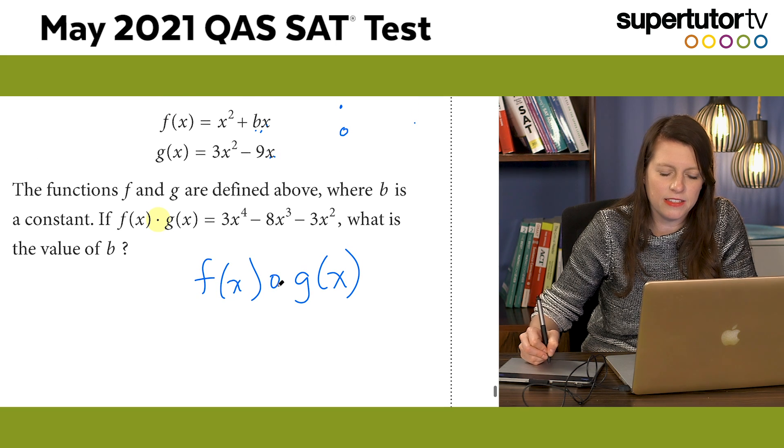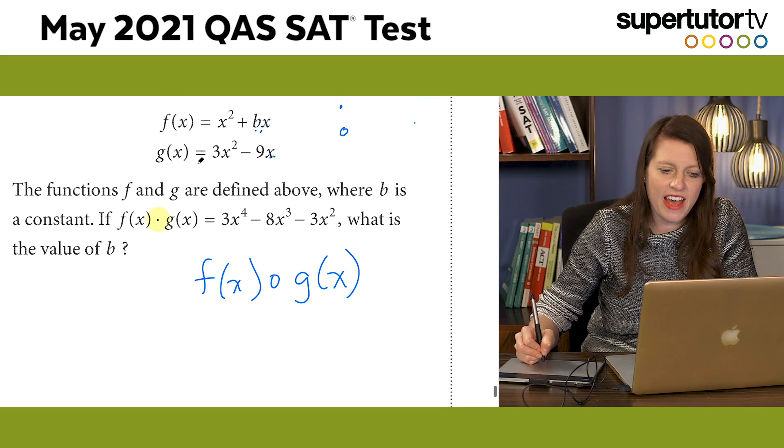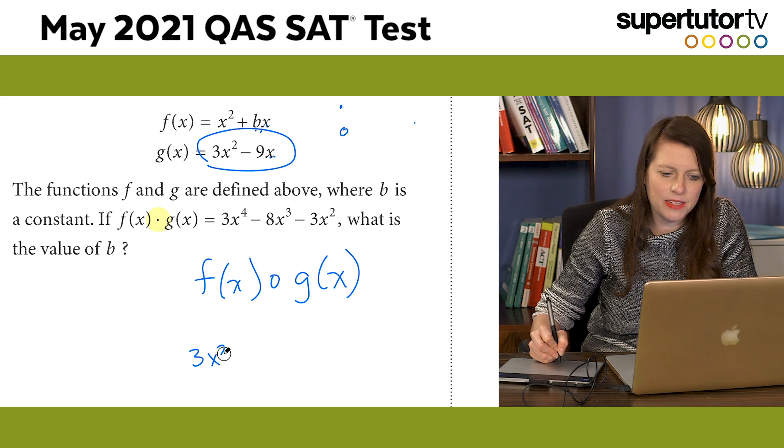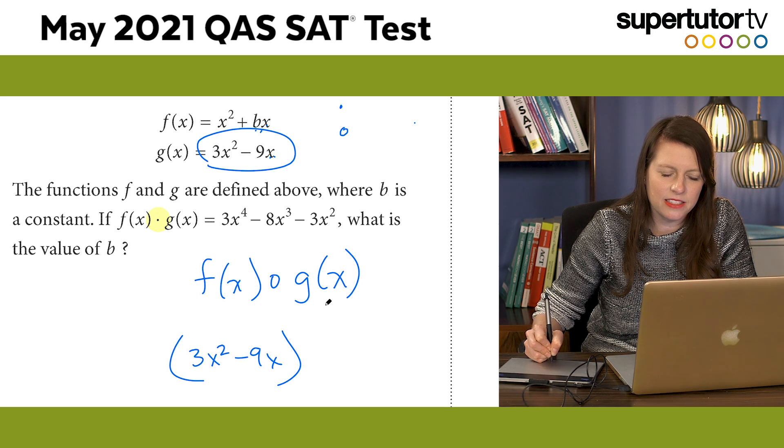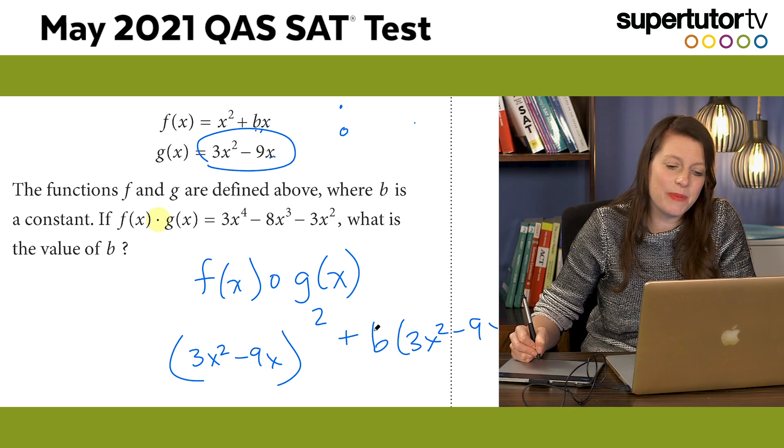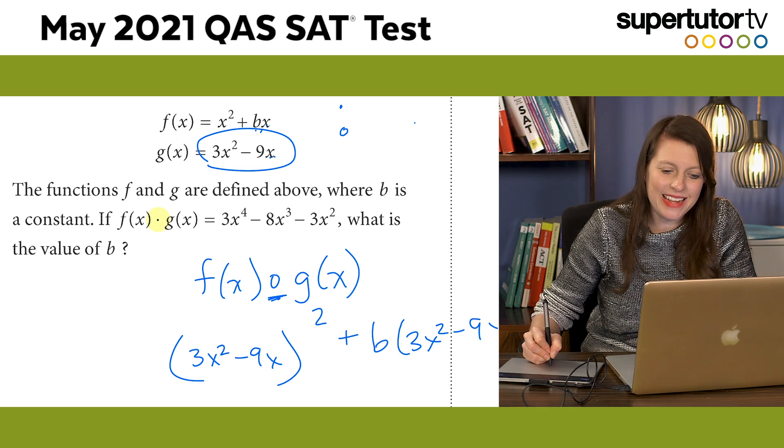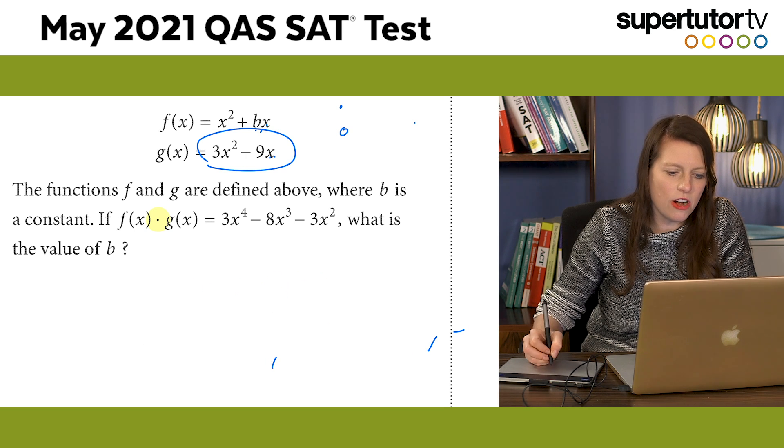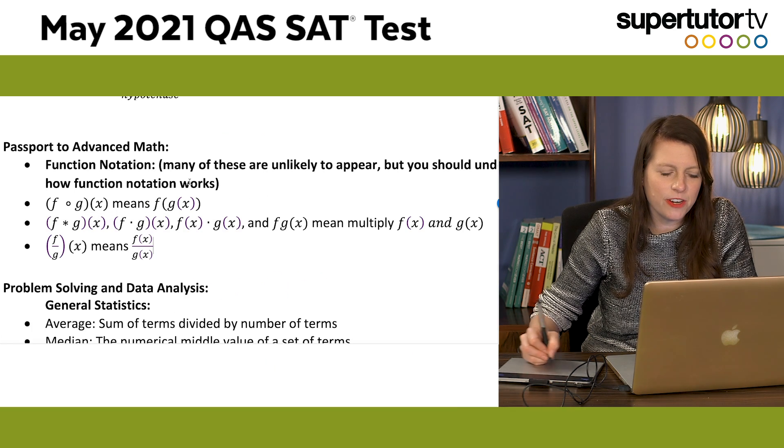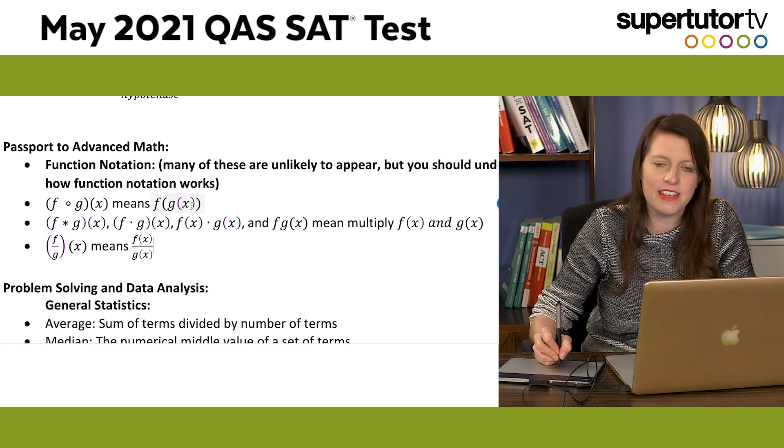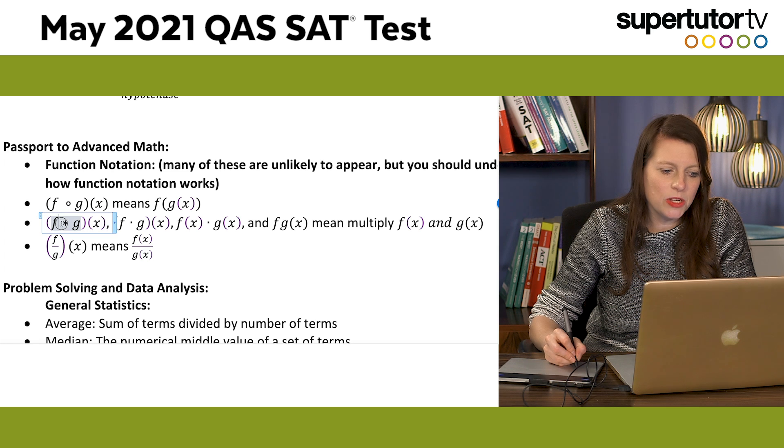Composite function means you plug it in. So if I were going to do this, right? F of X, right? F of G of X. F of G of X means I plug this whole thing into everywhere I see an X. And that means I'm doing three X squared minus nine X quantity squared plus B times three X squared minus nine X. Okay. So if you did that, you made your life harder than it needed to be. And you were wrong because that's a composite function. And I realize this is super confusing. This is just multiplication. We have this on our cheat sheet. You can see here, some function notation tips. This means composite function. What does composite function mean? It means you plug everything in, right? Like I showed you there.